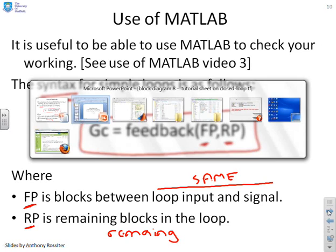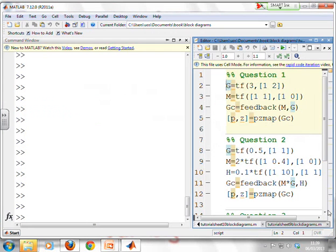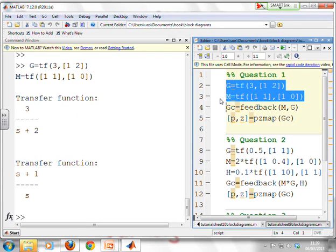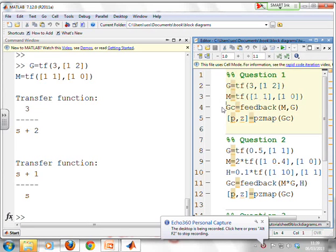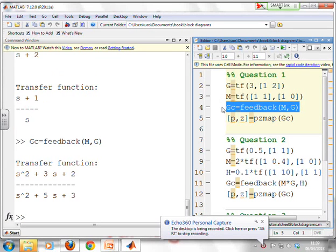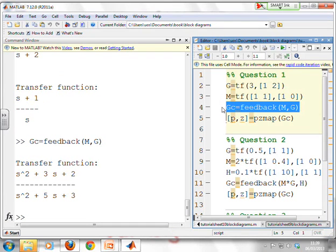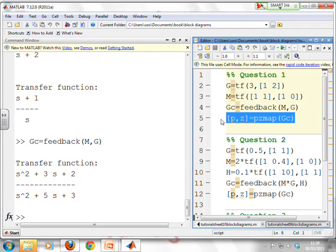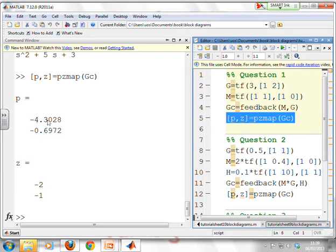I'll move to the MATLAB window now and demonstrate. First example: you see we have G and M. I'll enter those. G is 3 over S plus 2, M is S plus 1 over S. The feedback statement I use is feedback M comma G. The forward path was M and what's left in the loop is just G. Here comes the answer. If I want to find where the poles are, I can use this PZMAP command. There are the poles at minus 4.3 and minus 0.69.